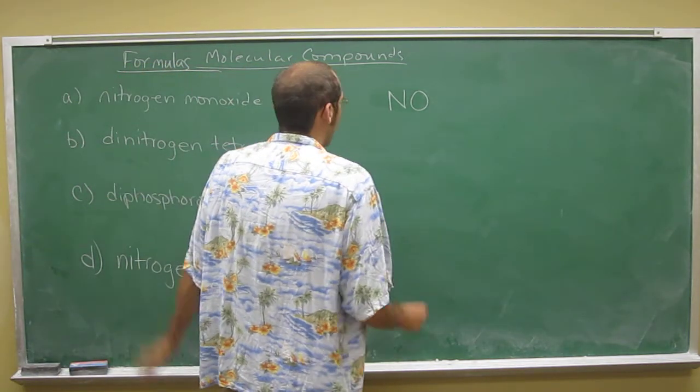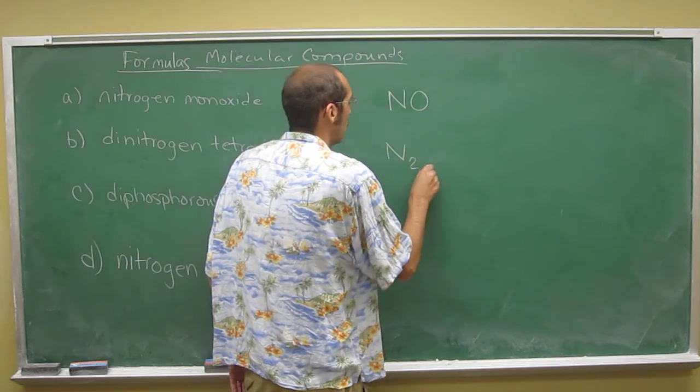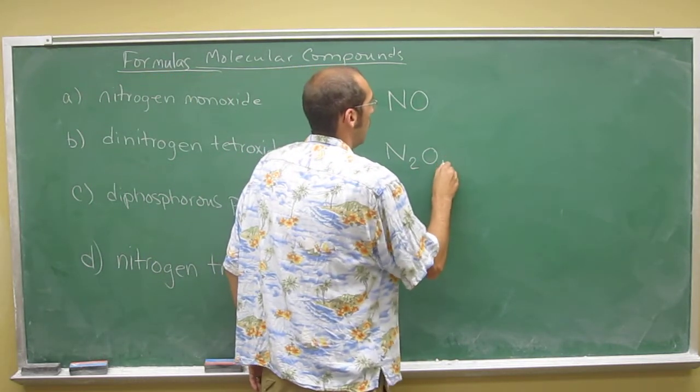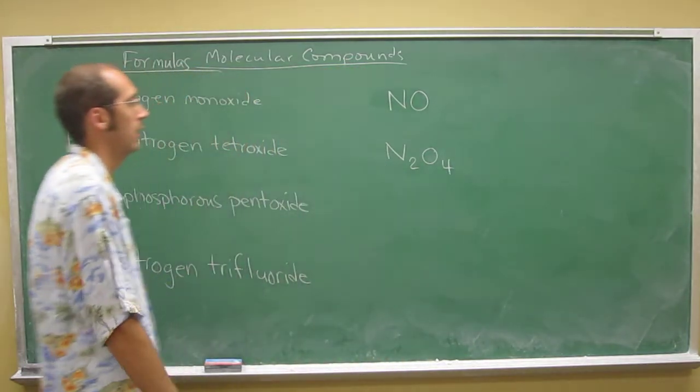Here, dinitrogen is going to be N2 tetraoxide O4. Tetra is 4.